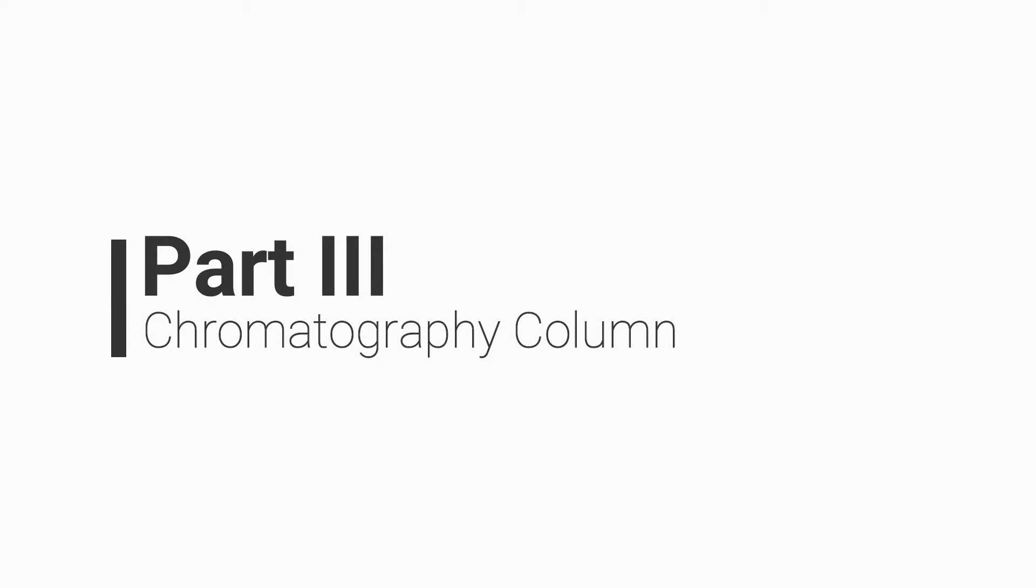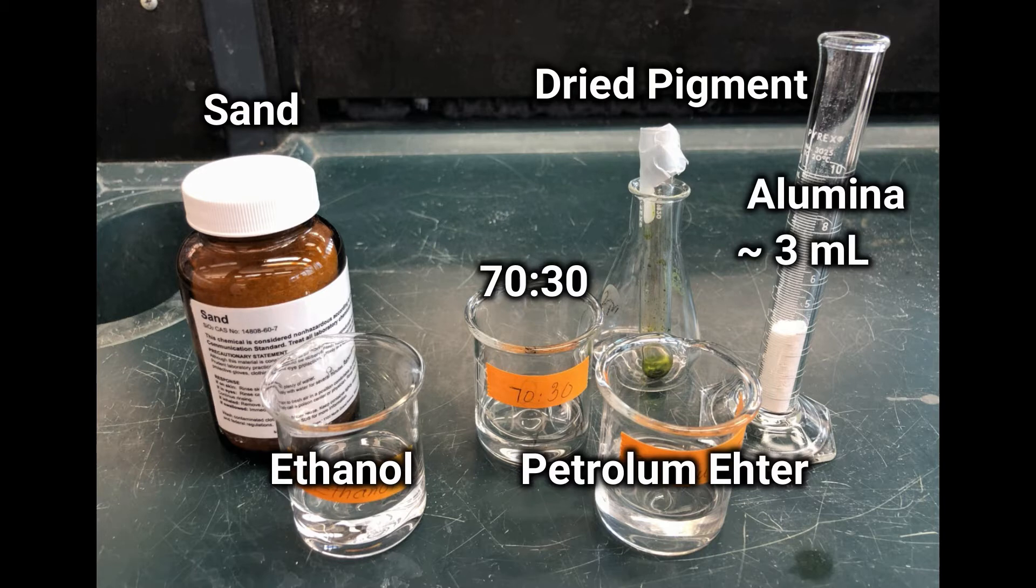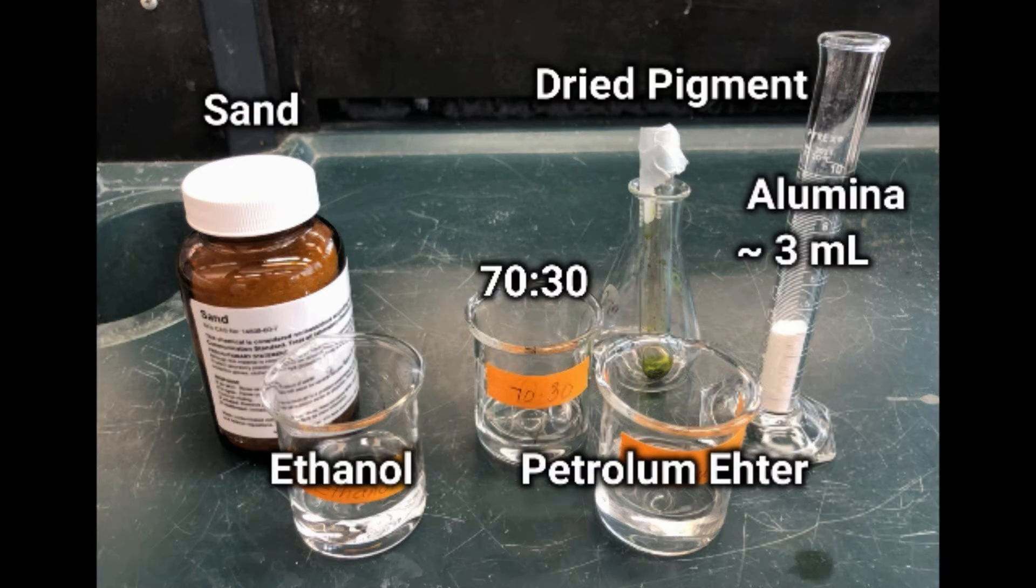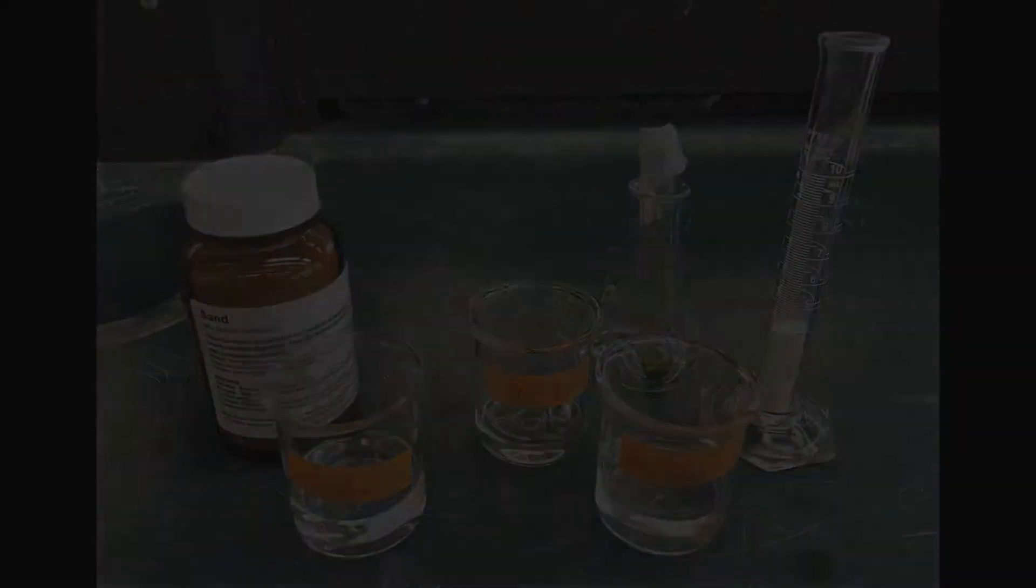In part 3, we will be separating the pigments using column chromatography. You will need sand, about 5 mL each of ethanol, petroleum ether, 70-30 petroleum ether, and about 3 mL alumina as well as the dried pigment from part 2.